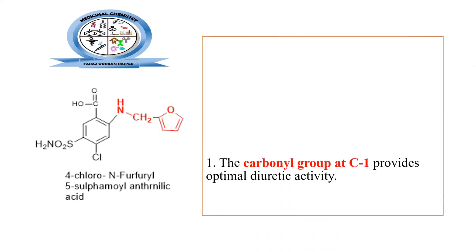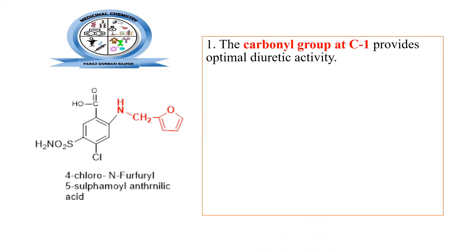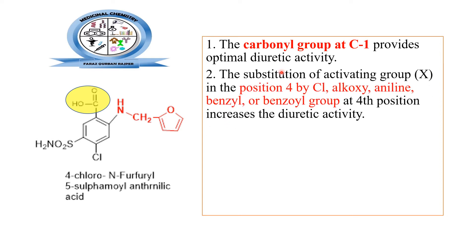This is the chemical structure of furosemide. At position 1, the carboxylic functional group is essential for optimal loop diuretic activity and must be left unsubstituted, since these loop diuretics are mainly carboxylic acid derivatives.